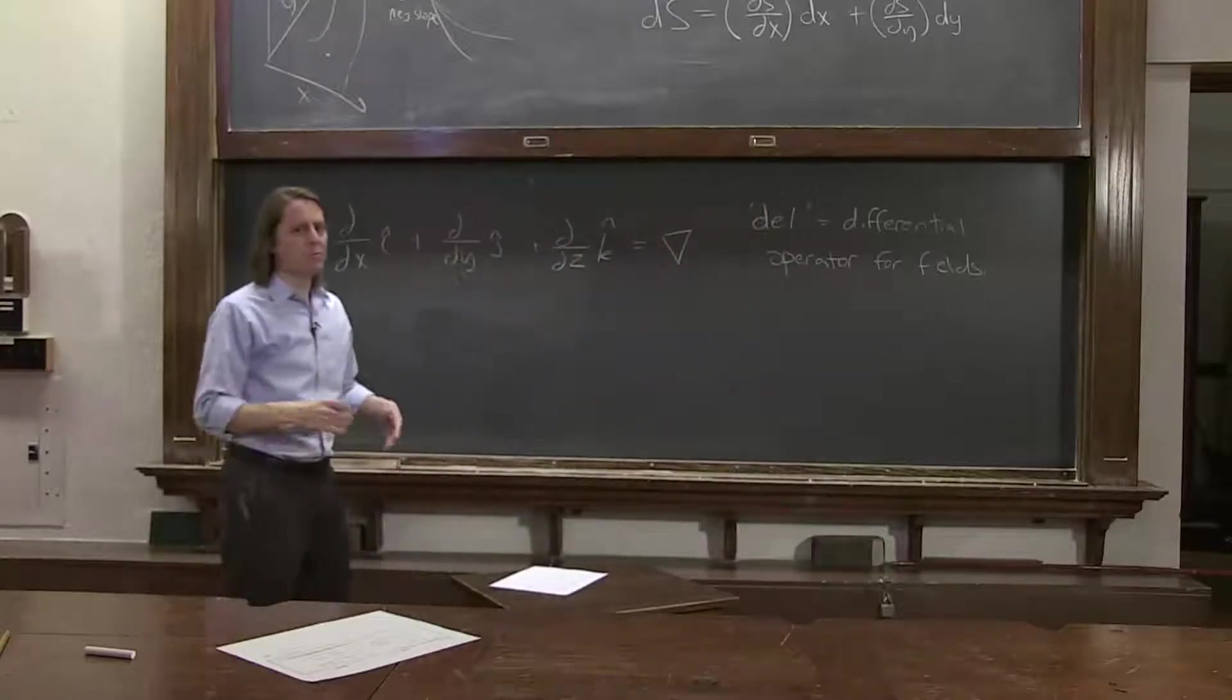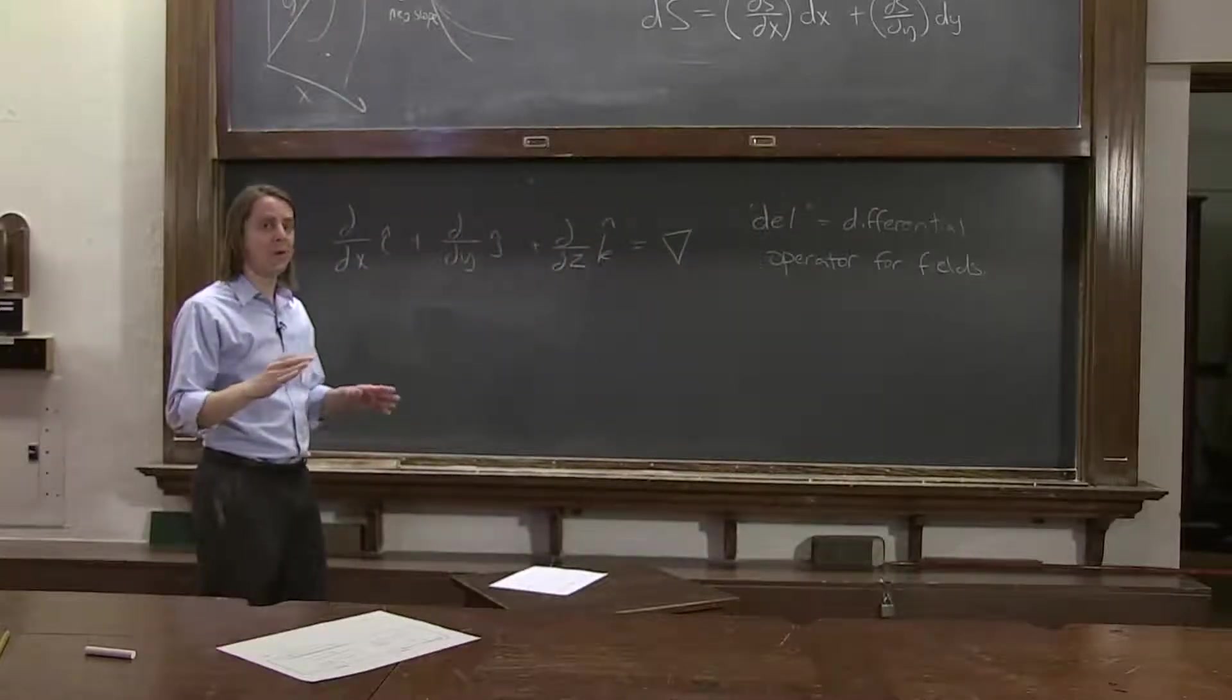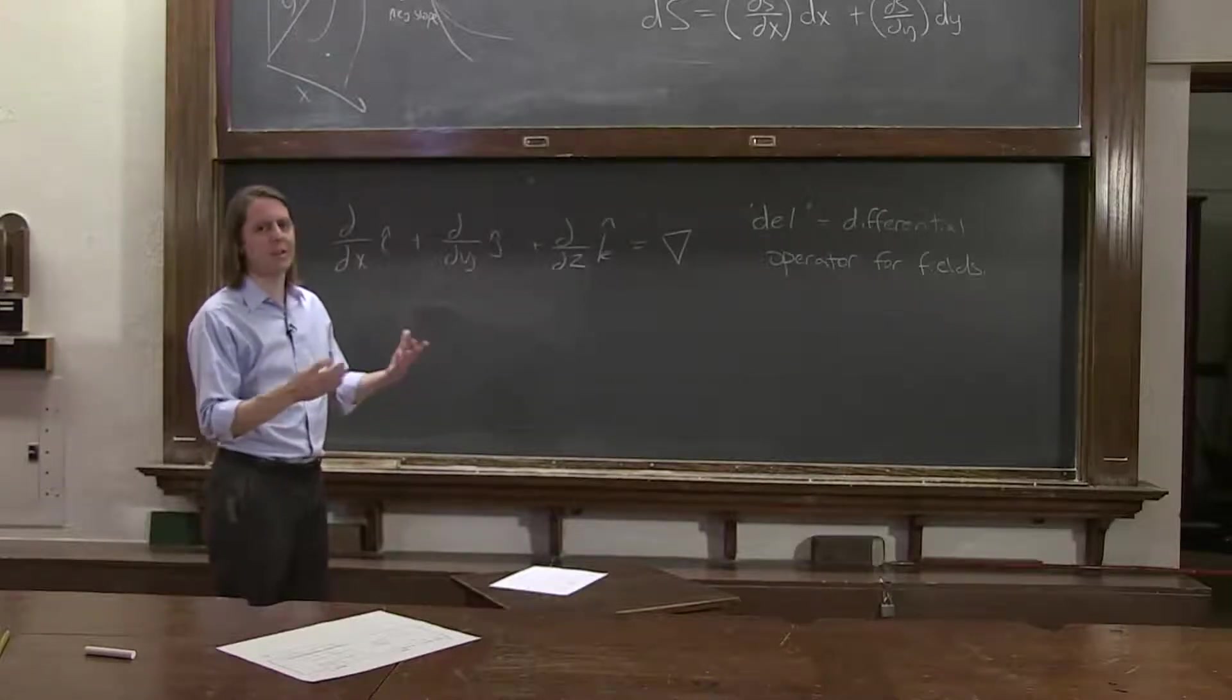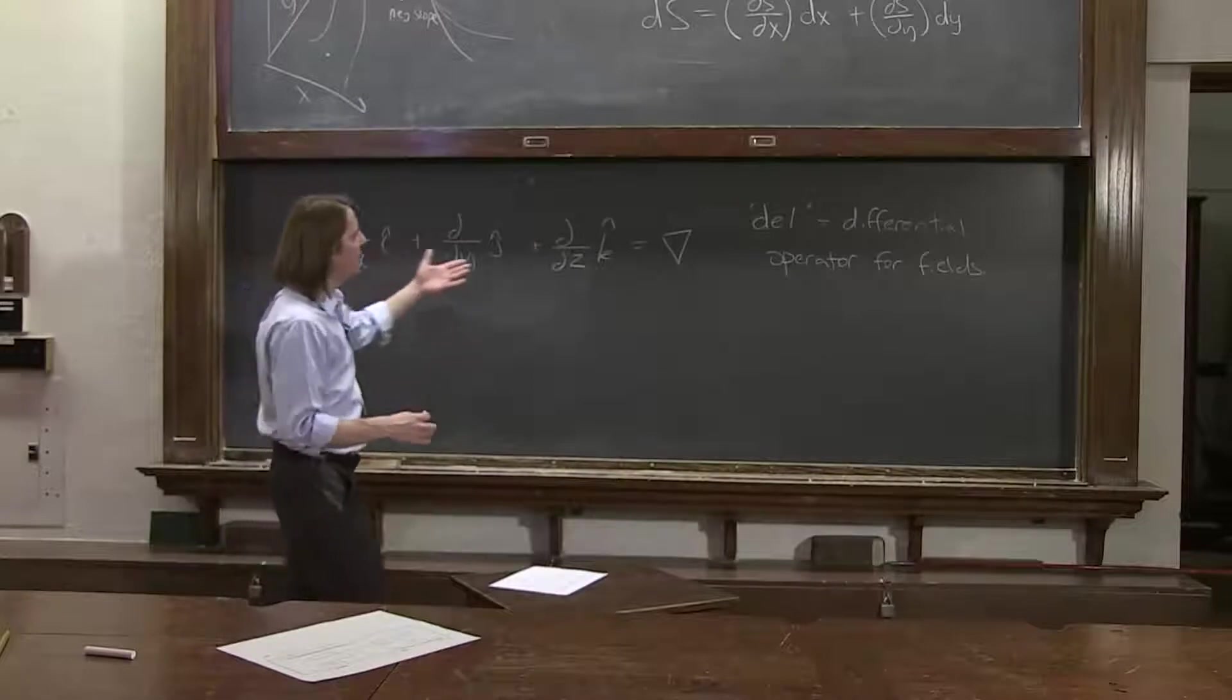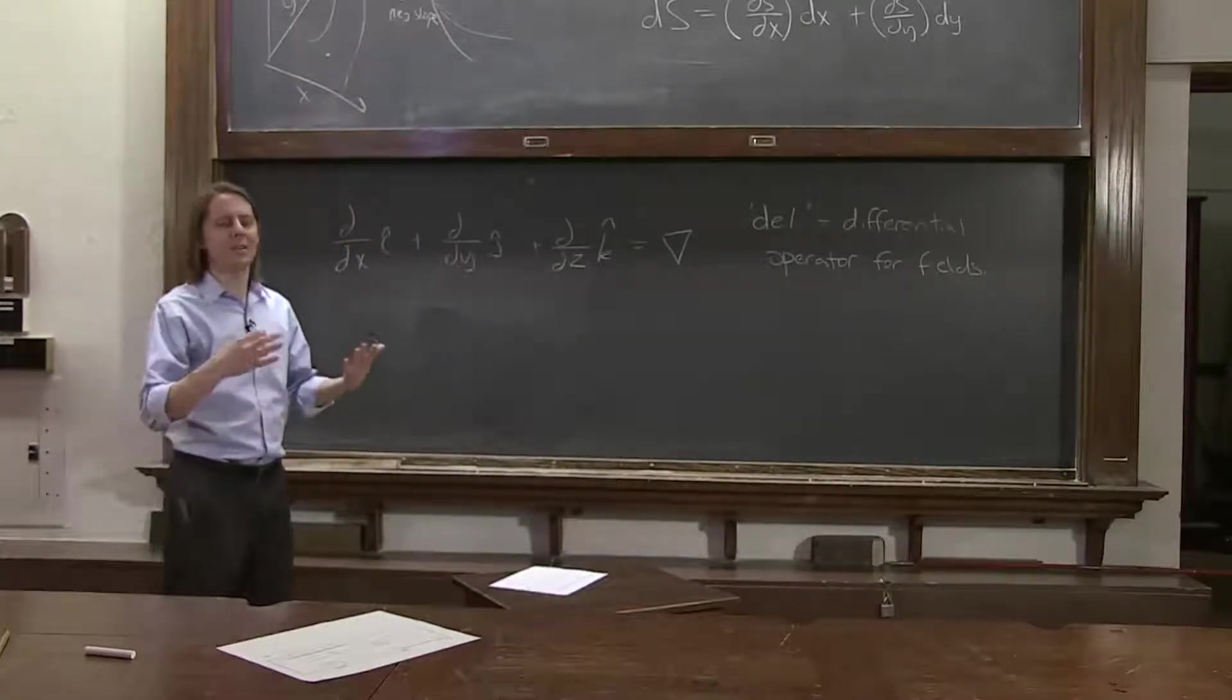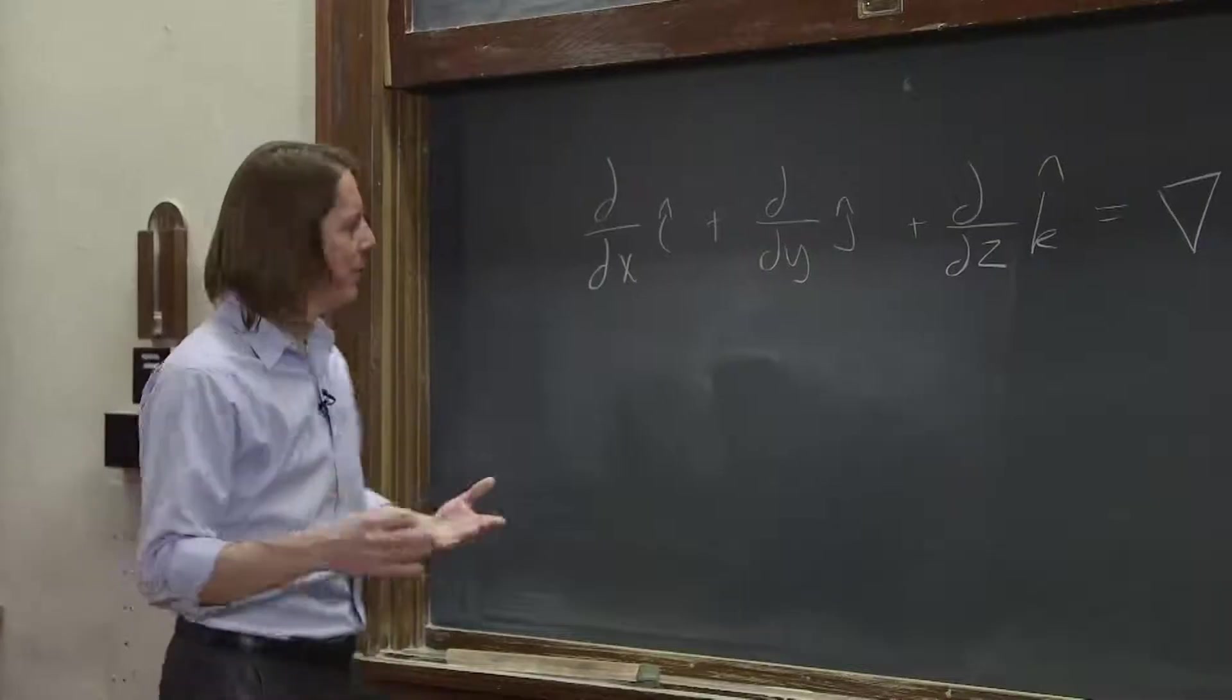It doesn't really multiply fields, it just operates on fields. It's like taking a derivative of a function. You don't multiply the function times the derivative, you just take a derivative. So when you apply del to a field, you're not multiplying by the field, you're just taking the del of a field.